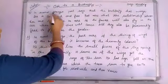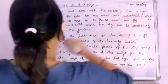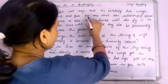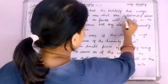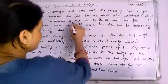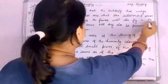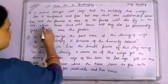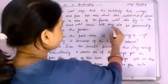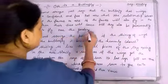In the second stanza, the poet says that the butterfly has wings. She is confident and free. The poet asks what the relationship between her and the flowers is. He asks if the flowers will also fly in the air when their time will come. Will they also be permanently free to fly over the garden?